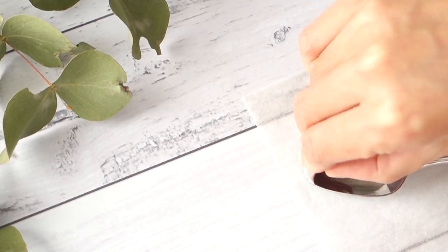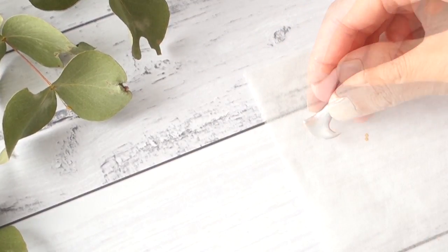You can actually let that harden and then pick it off and re-melt it when you're making your next wax seal.